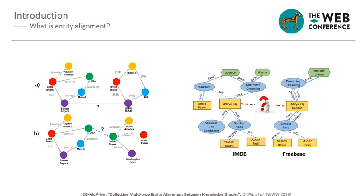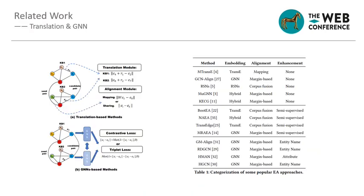With more and more knowledge graphs emerging, integrating multi-source knowledge graphs becomes more necessary and beneficial — not only to complement information but also to improve downstream tasks such as recommendation systems and search engines. Therefore, this task attracts increasing attention in recent years.